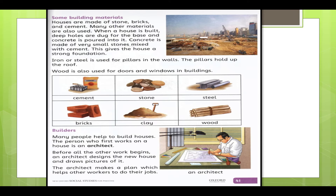Many years ago, when people didn't live in houses, they used to live in caves. Then people started living in huts on the ground, but huts didn't protect them from heavy rain. So people made houses with stones and mud. Nowadays, houses are built with cement and they are much stronger. Houses are made of stone, bricks, and cement.